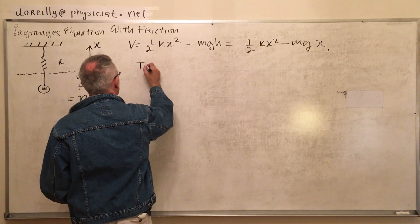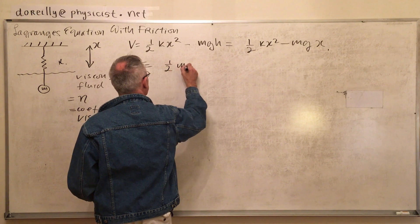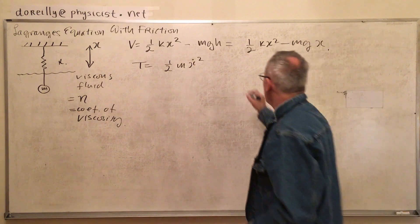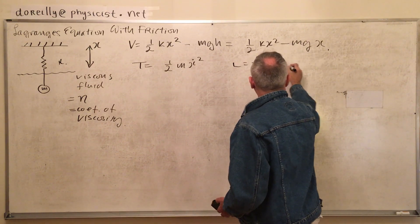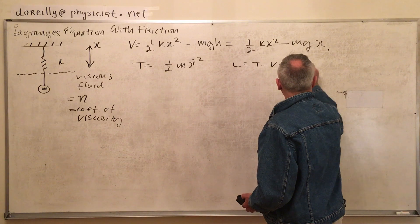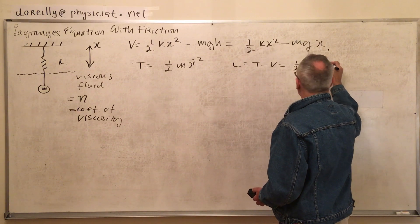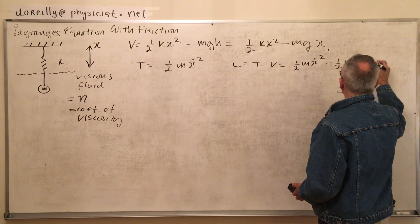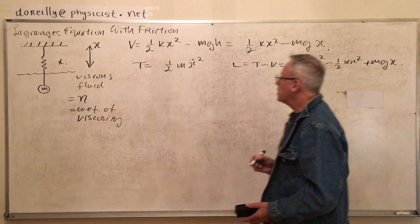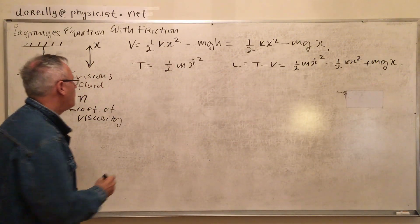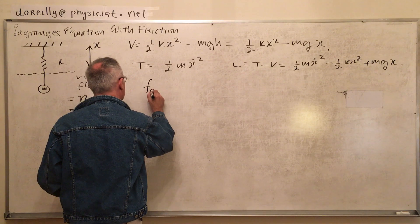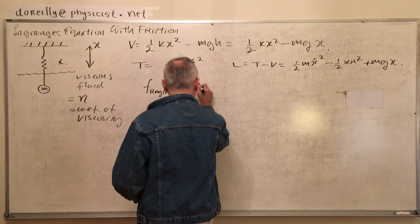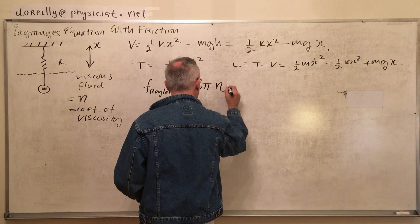T is the same as before, kinetic energy is half m x dot squared. Therefore L equals T minus V, which is m over 2. Now we have to have a Rayleigh dissipation function. It's actually going to be 3 pi eta r, where r is the radius of this sphere.